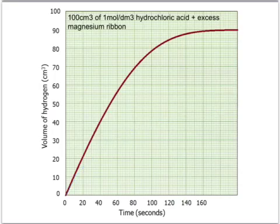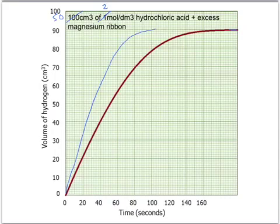What about if we change both the volume and the concentration? For example, 50 cubic centimetres of a 2 mole per cubic decimetre hydrochloric acid. The number of moles would be exactly the same because we've halved the volume and doubled the concentration — since moles equals concentration times volume. So we'd expect to get the same total volume of gas. However, using a higher concentration of acid should give us a faster reaction, so the line would be steeper and the reaction would probably be over quicker.